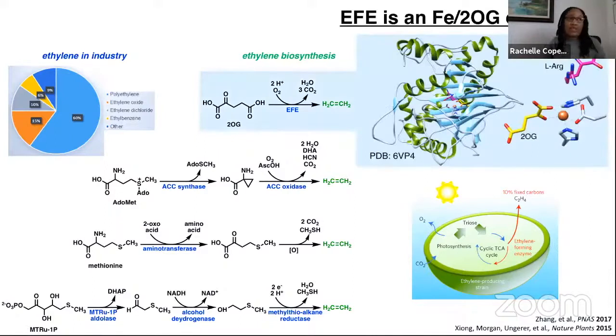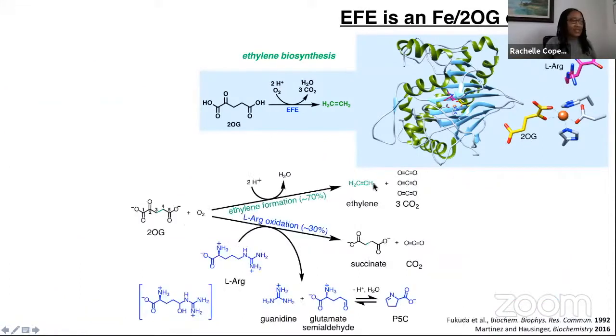EFE is an iron and 2-oxoglutarate-dependent oxygenase. As shown here in its structure, it uses a mononuclear iron cofactor that's ligated by two histidines and one carboxylate residue from the protein, and also is ligated by the 2-OG, what we call co-substrate. You notice that L-arginine is also bound in the active site, and that is because this enzyme is actually bifunctional.